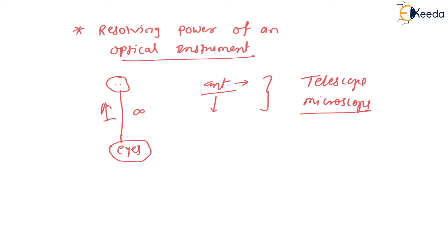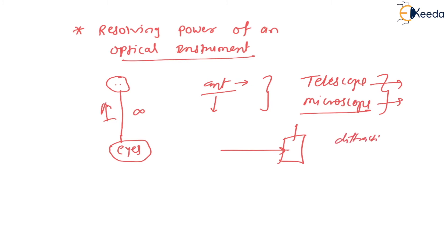Along with these two we have other optical instruments with different types of advantages and uses. When we use a telescope or microscope we can easily see those two objects separately — these optical instruments have the ability to separate them. This happens because when light passes through an optical instrument we get a diffraction pattern, which contains the central maxima — the brightest point with maximum intensity — and on both sides alternate minima then secondary maxima.